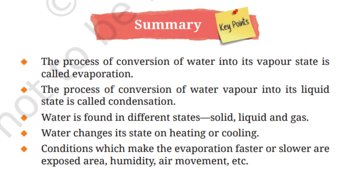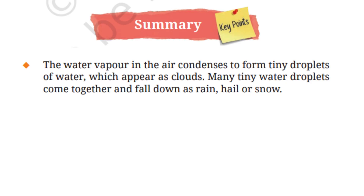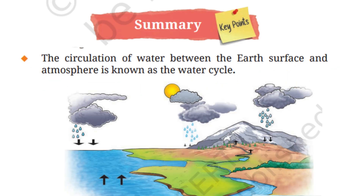Conditions which make evaporation faster or slower include exposed area, humidity, air movement, etc. Evaporation causes a cooling effect. Water vapor in the air condenses to form tiny droplets which appear as clouds, and many tiny water droplets come together and fall down as rain, hail, or snow. The circulation of water between the earth's surface and atmosphere is known as the water cycle.